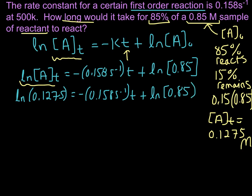Now we're ready to put in the numbers. Remember, the natural log of 0.1275 is just a number. When I put that into my calculator, I get negative 2.0596. We still have our rate constant 0.158 seconds inverse times time, which is what we're looking for. The natural log of 0.85 is also just a number. Put that into my calculator, and I get negative 0.1625.